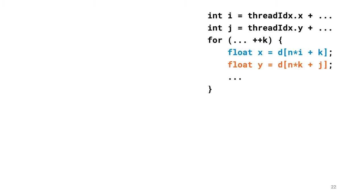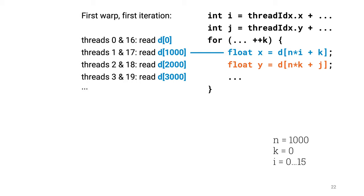Now what happens inside the innermost loop? Let's say n is 1000. In the first iteration, k is 0, so here we will read element 1000 times i. And now i ranges from 0 to 15. So we are reading all over the place. Element d0, element d1000, element d2000, etc. This is clearly bad. We read 16 different words far from each other, and we need probably 16 cache lines of data. This isn't as bad as possible. We are not reading 32 different elements, just 16, but still far from ideal.